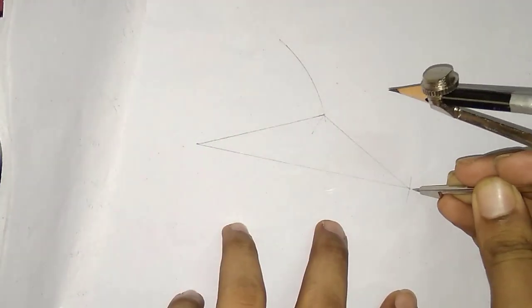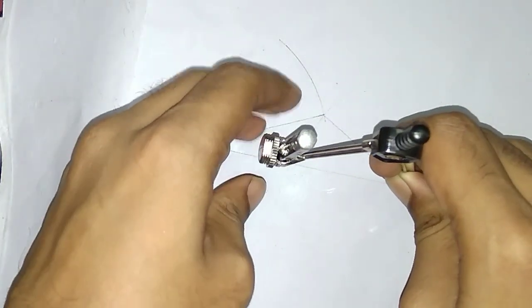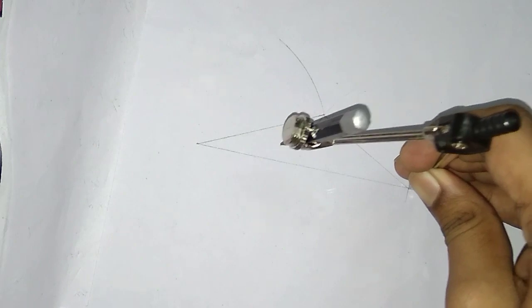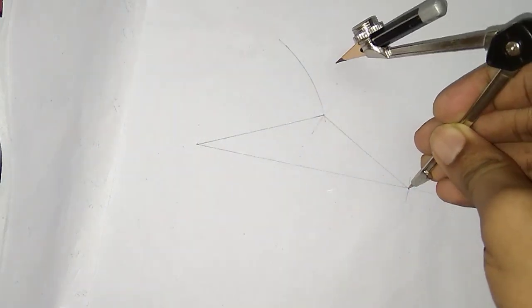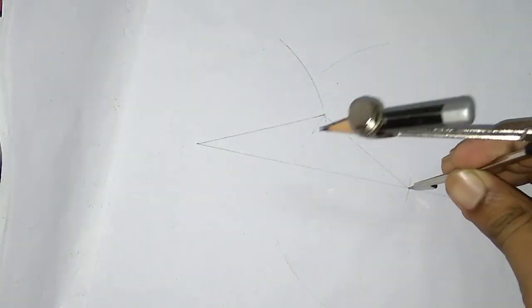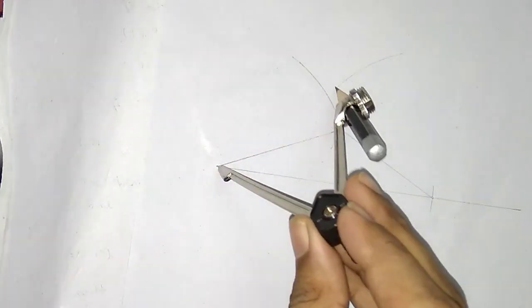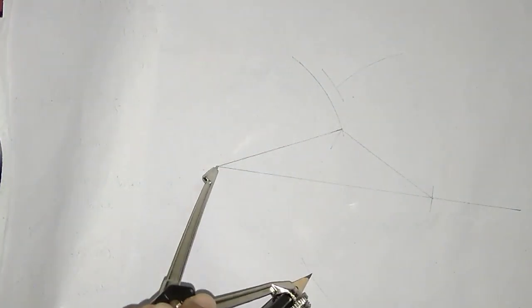Now the next task is to bisect the base of the triangle. To bisect any line, we take the compass more than half of that line by eye measurement, and draw an arc in the upper direction and lower direction, putting the compass on one end. Without changing the compass measurement, we do the same thing on the other end.